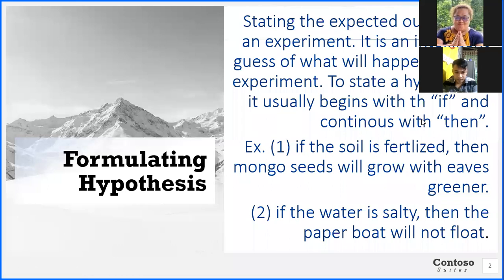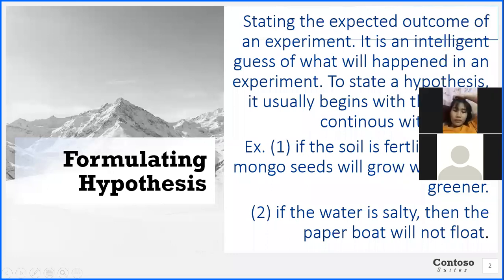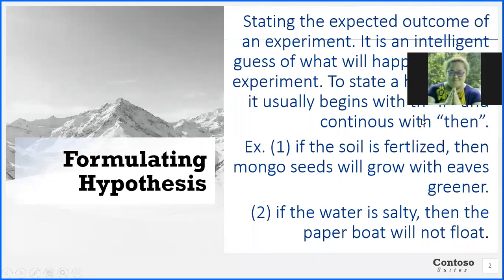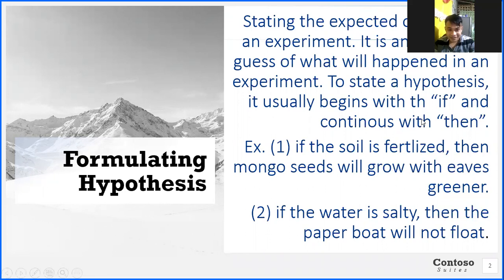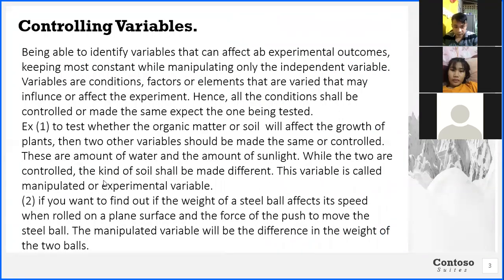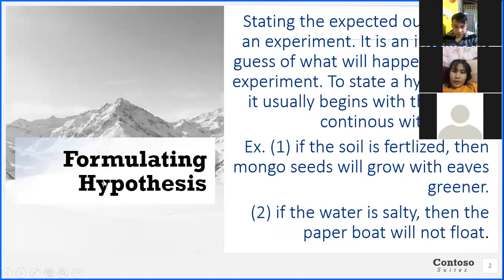Formulating hypothesis — this is one of the most important parts in science. Let's say we would be making a hypothesis. But the question is, how do you make a hypothesis that is very effective? It's about stating the expected outcome of an experiment — what are the possible things that could happen. Number one, it is an intelligent guess on what will happen in the experiment.